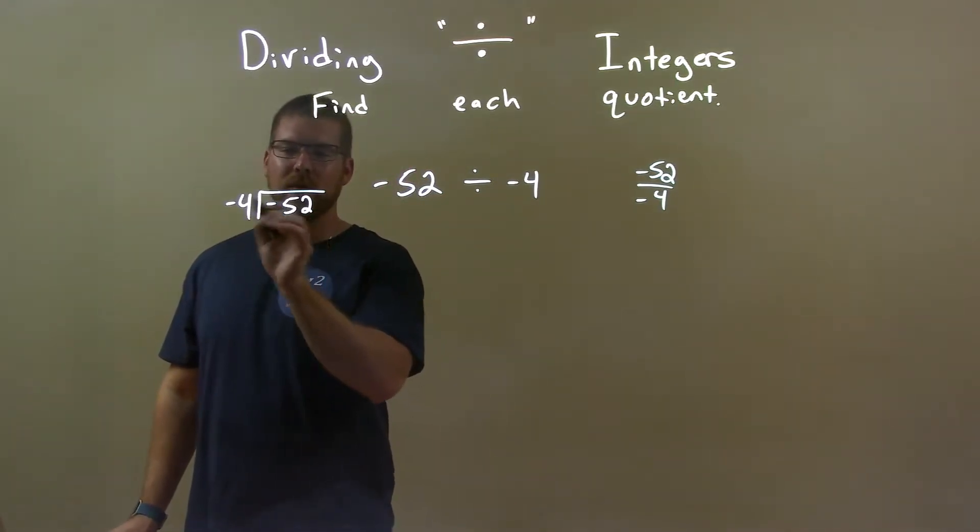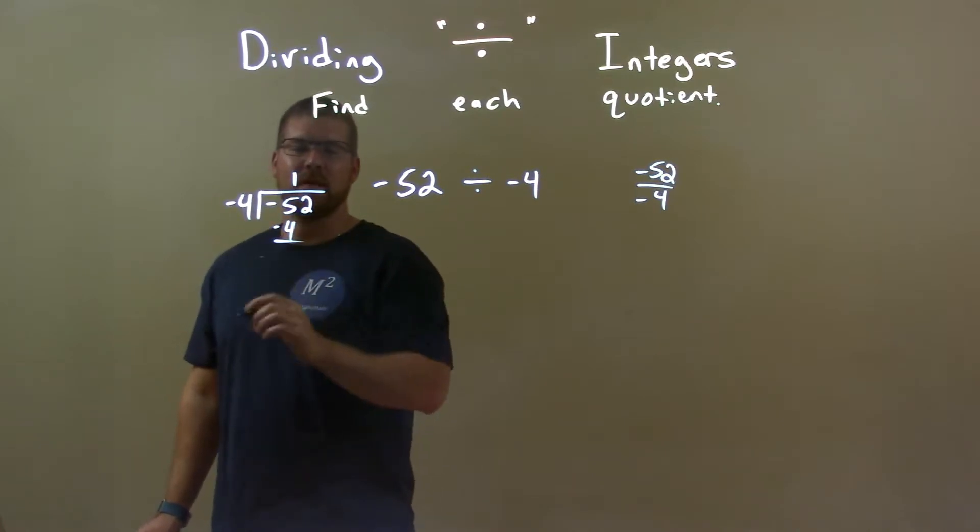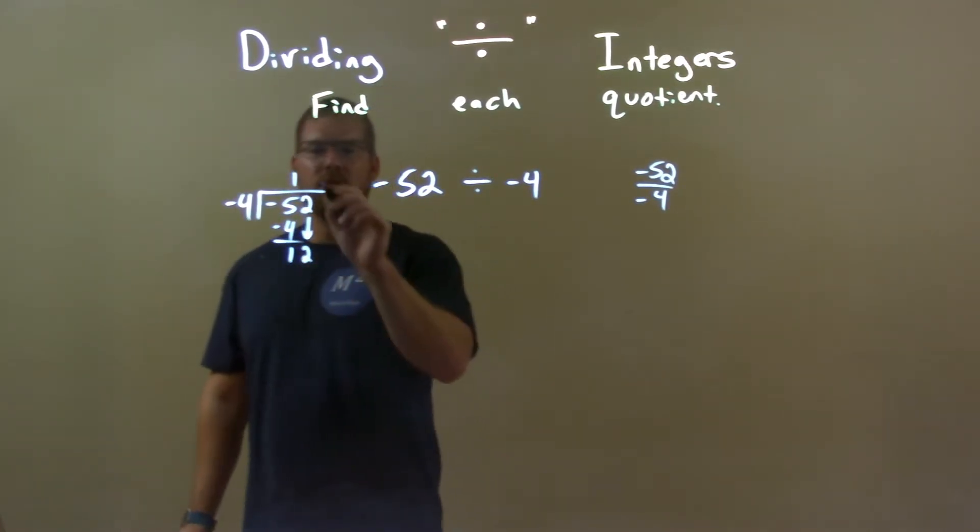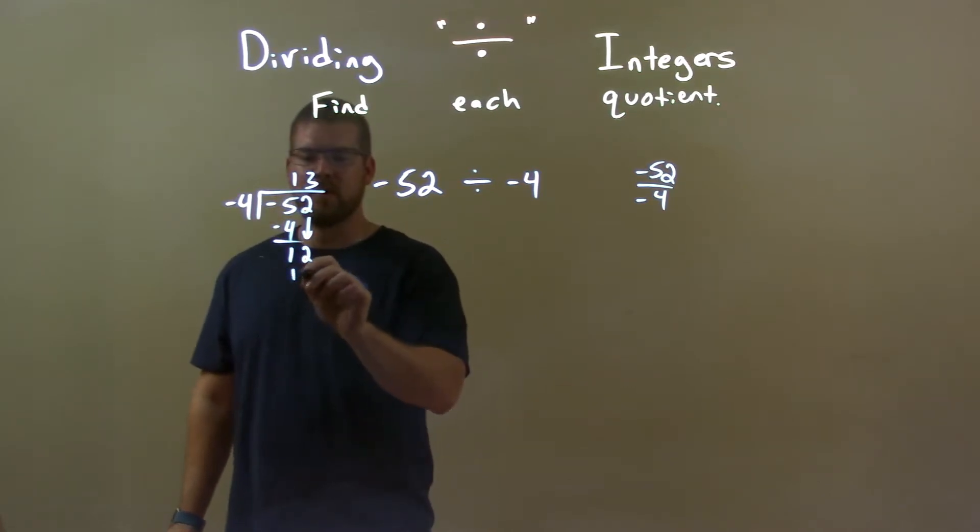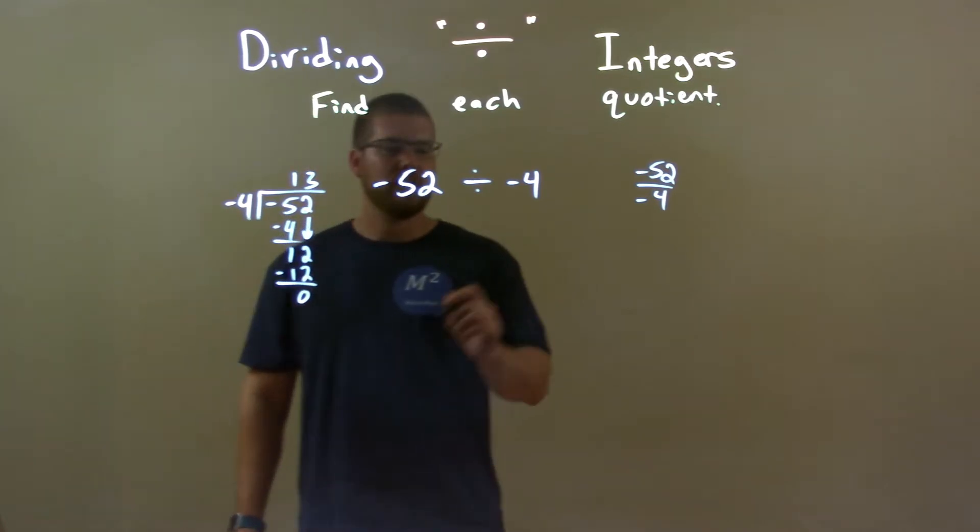4, now we're going to ignore the negatives right now. 4 into 5 is 1. 1 times 4 is 4. Subtract the 2. 5 minus 4 is 1 and bring down the 2. Now, 4 goes into 12 3 times. 3 times 4 is 12. And there we have it. 12 minus 12 is 0. So our answer is just 13.